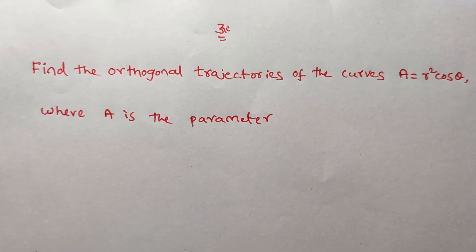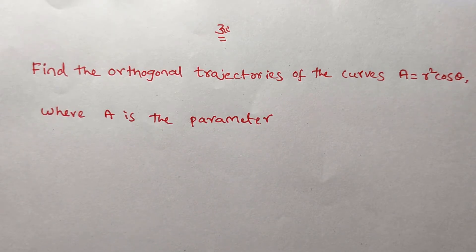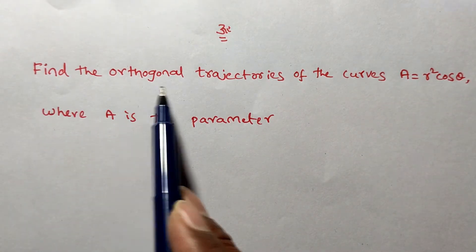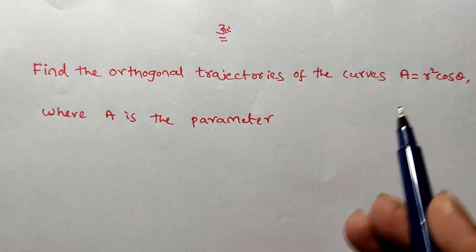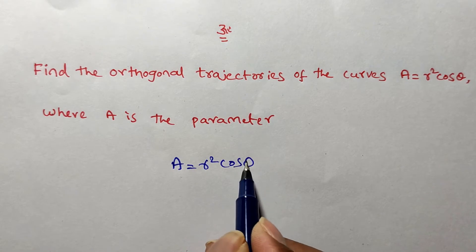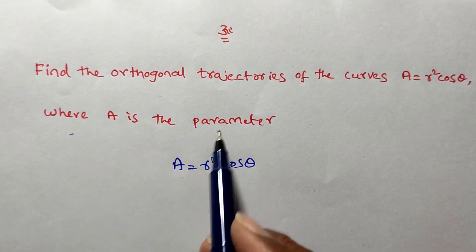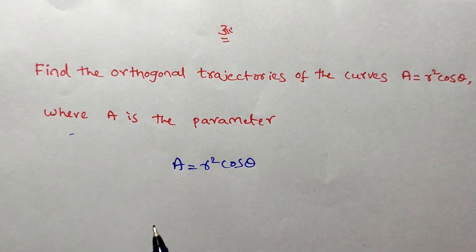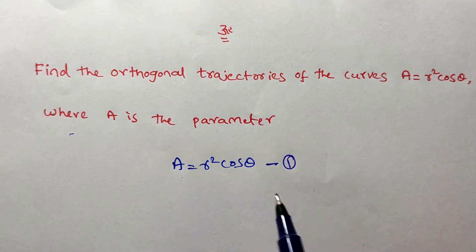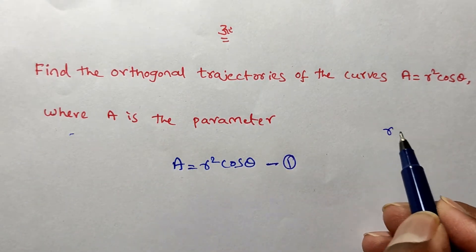Welcome back to Team Education. In this video we are solving a problem on orthogonal trajectory. The given problem is: find the orthogonal trajectories of the curve a = r² cos θ, where a is a parameter. We consider this given function as equation number one — this function is in terms of r and θ.